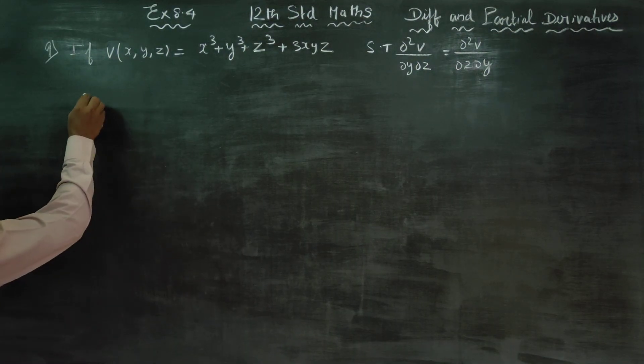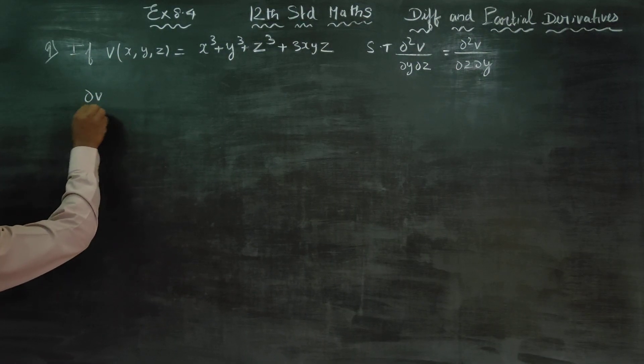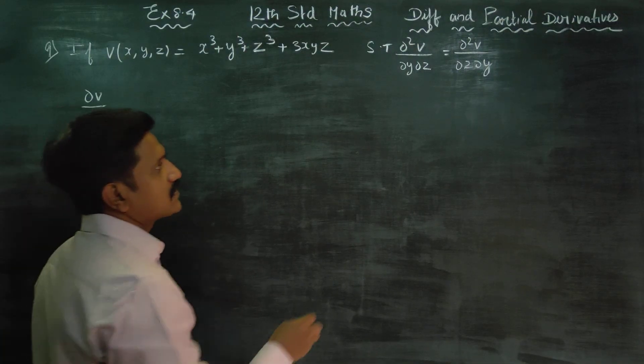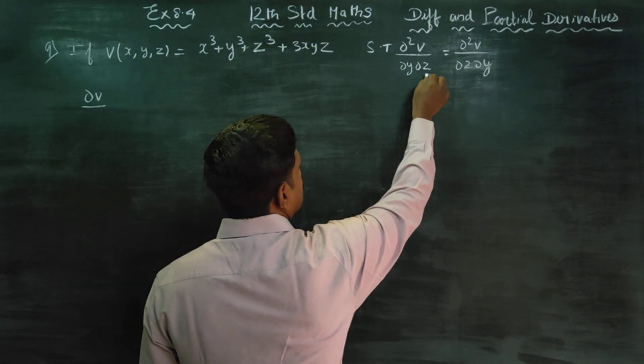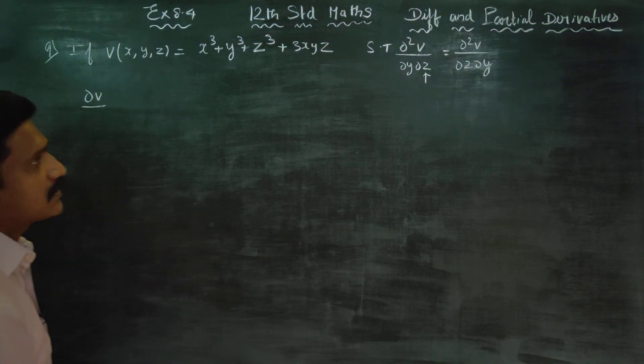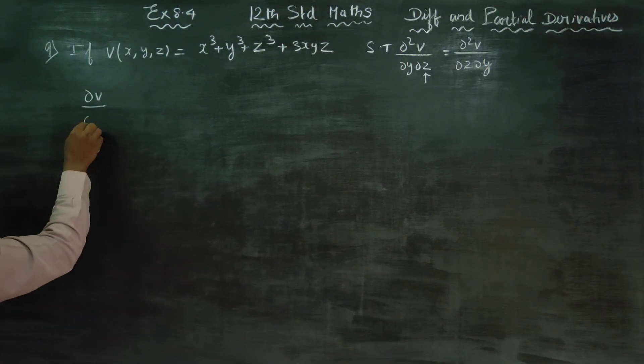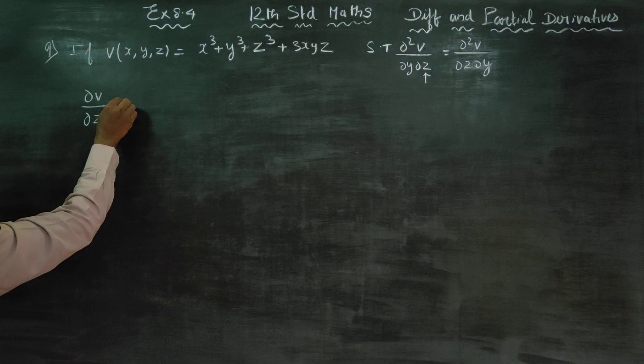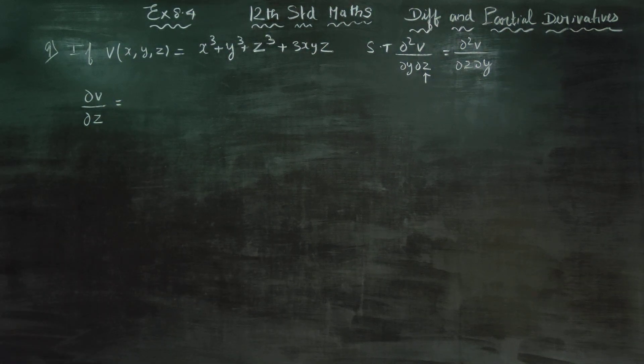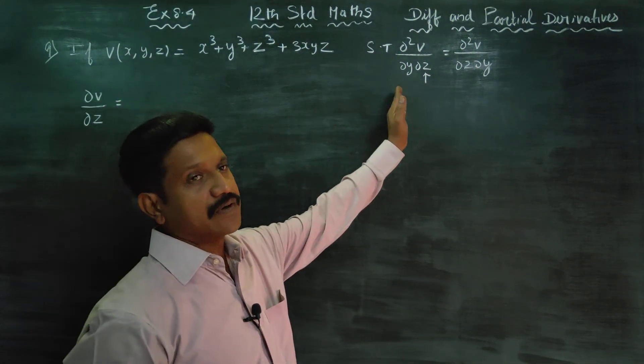First we will start with LHS. LHS start with the interior. If you start with LHS, you will start with LHS. But this is a partial differentiation. We are going to differentiate only with respect to z.